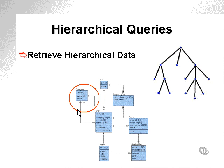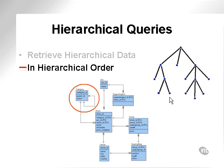The category table in our concept schema actually has a two-level hierarchy with parent categories and categories. We can use that example, and we will use one or two others to get a better representation. As you can see, a hierarchy is really a tree-like structure. Hierarchical queries allow us to represent hierarchical structured data in a hierarchical or tree-like structured order.